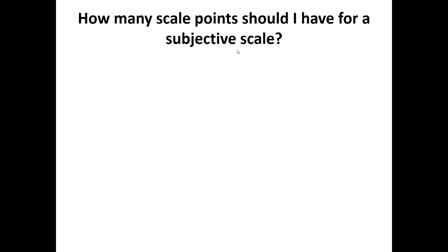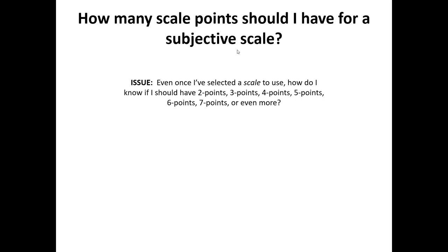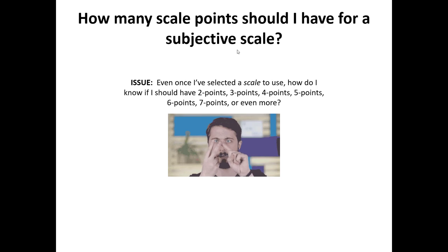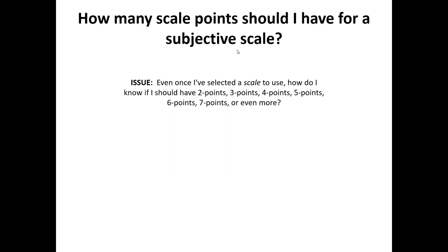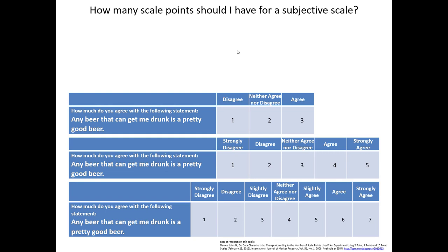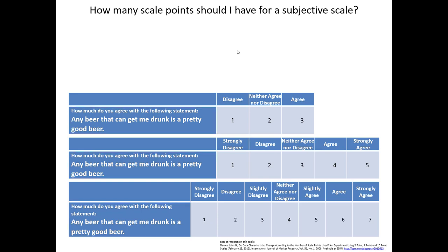An issue we also regularly deal with is determining how many scale points we want to have in our subjective scales. Even once you've selected a particular scale to use, how do you know if it should be a two-point scale, three-point, five-point, seven-point, or something more? Let's consider one of the questions from the craft beer survey previously. It appears we have settled on using a Likert-style agreement scale. The difference here is there are three different versions: one is a three-point scale, one is a five-point scale, and the other is a seven-point scale. Which one is right? This is one of those 'it depends' answers, so rather than saying there's definitively a correct choice, we should consider various important issues.